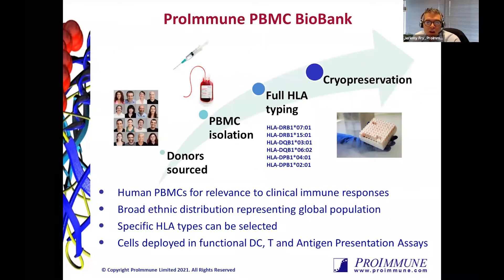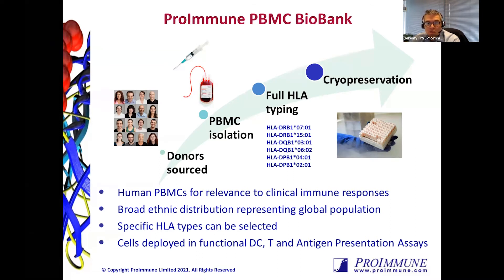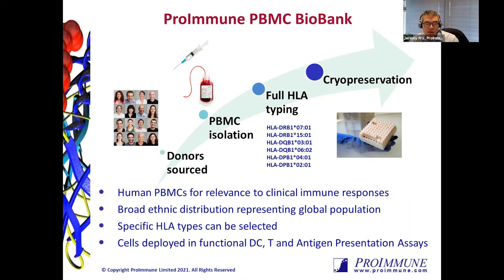At Proimmune, we have a large PBMC biobank. These are cells sourced from the UK NHS Blood and Transplant Service — healthy volunteers who have donated blood available for research use. We process the blood into PBMCs, cryopreserve them according to our own SOPs, and each individual donor is HLA-typed. We have a full spectrum of DR, DP, DQ, and also MHC class 1 where appropriate. Because we have this HLA genotype information, we can select donors to have a broad distribution of different HLA types, or narrow down on specific genotypes due to a disease association or other reason.